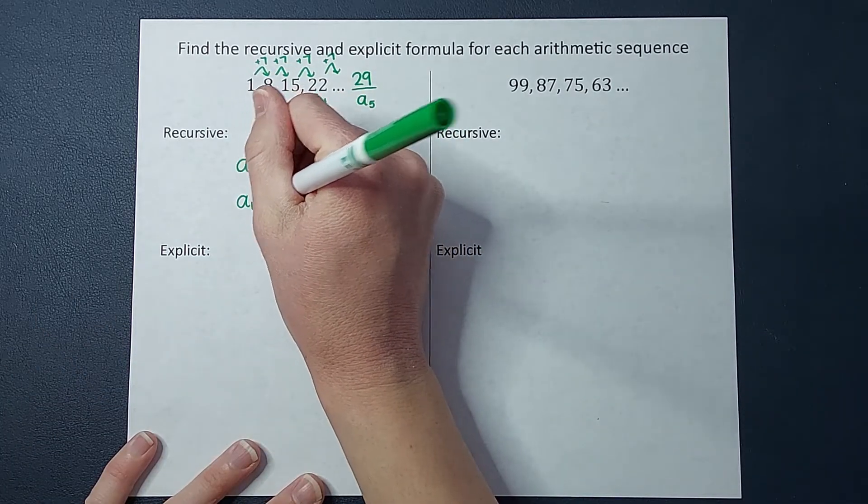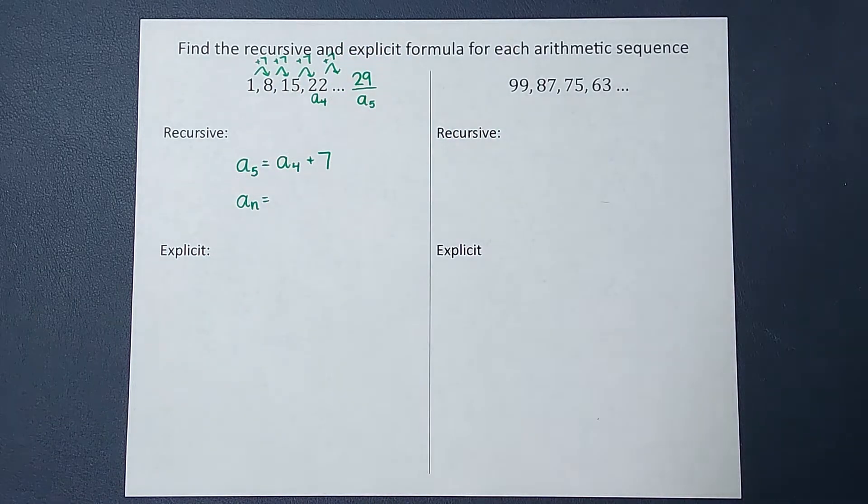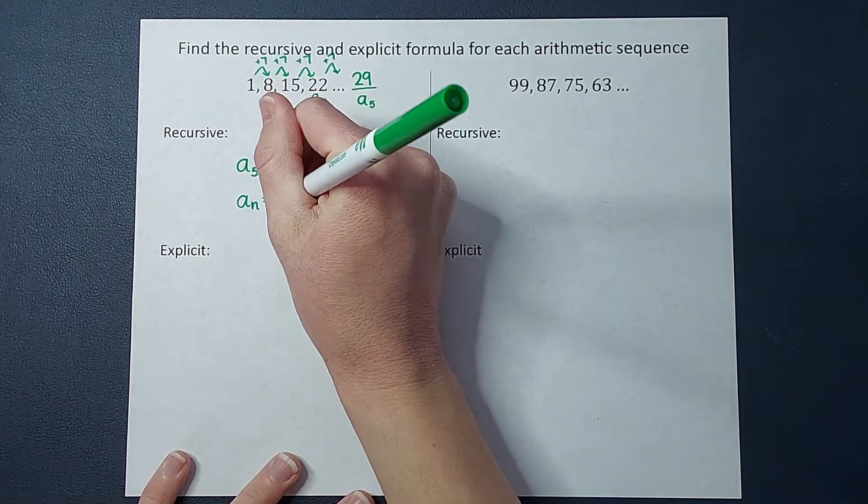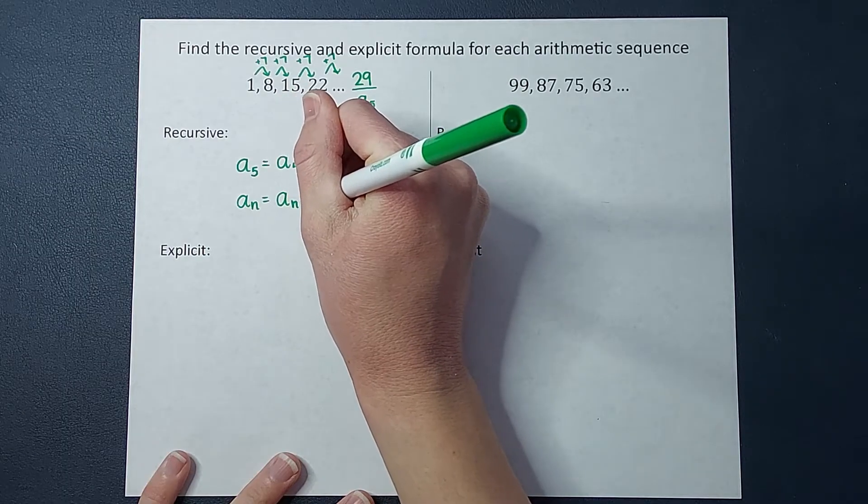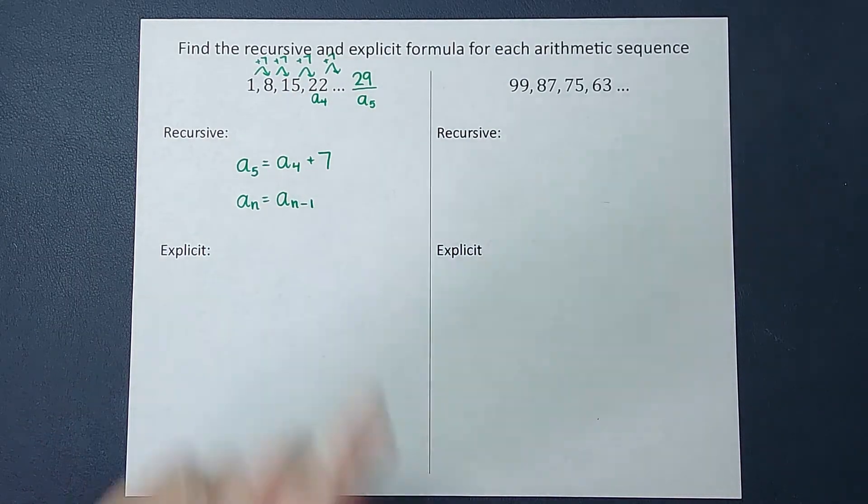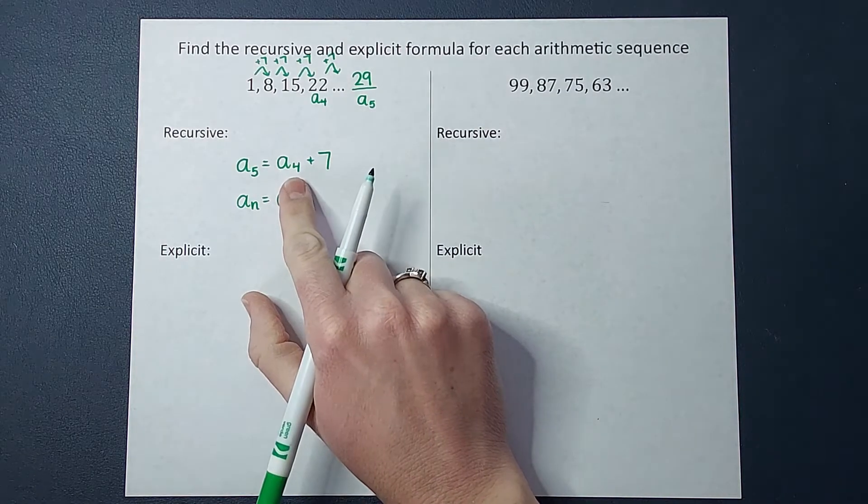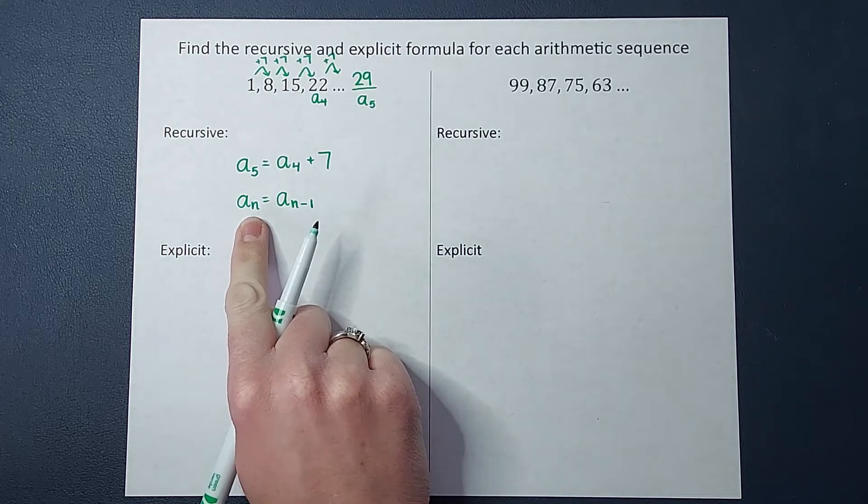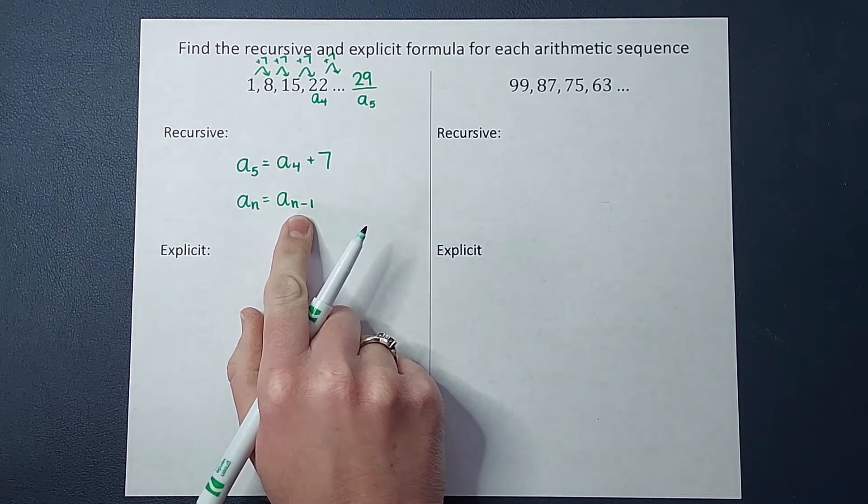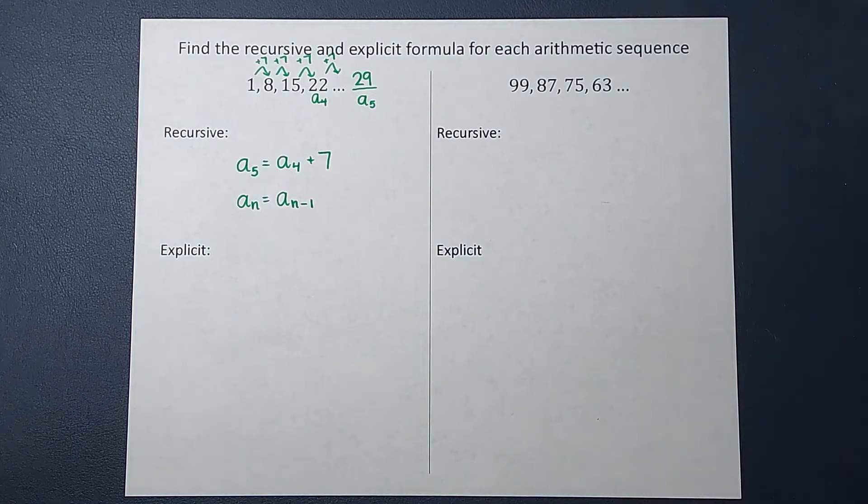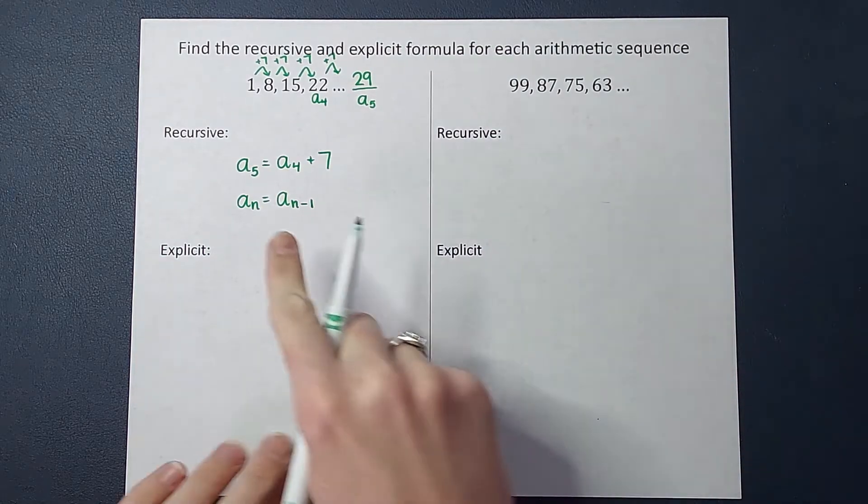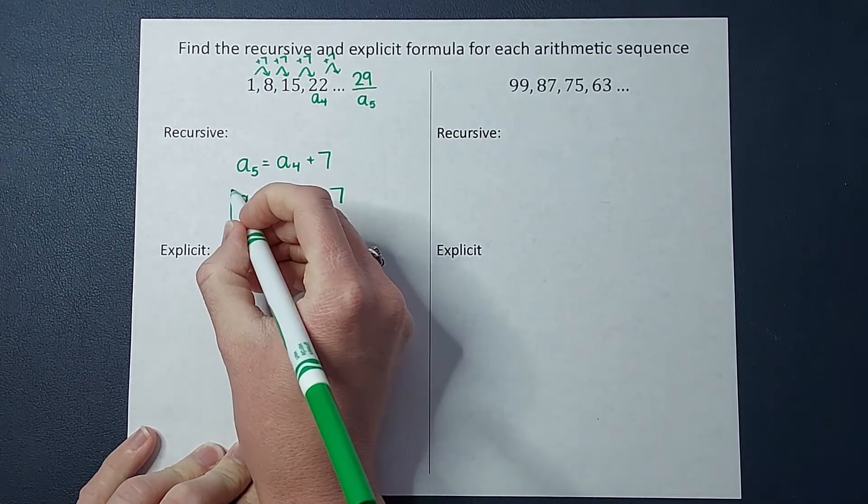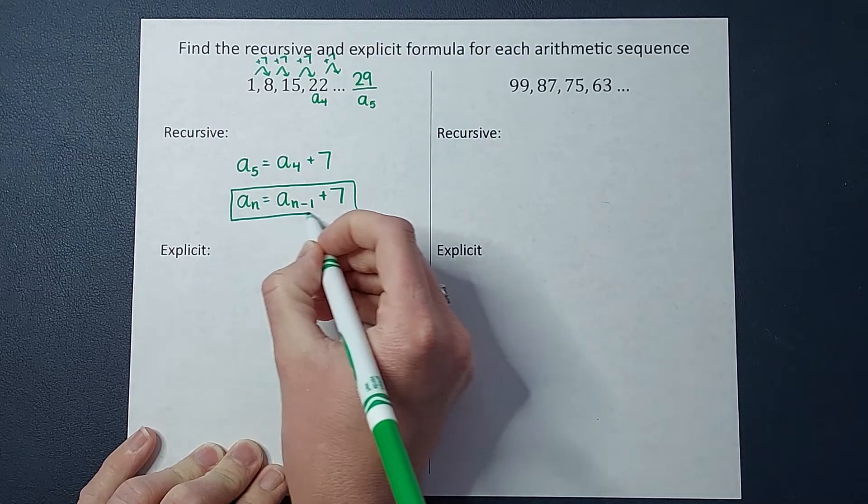So how do I show that in math language? This is where our a sub n comes in. So I'm going to say a sub n, which just means whatever place you want to find, you plug in what you want for n. Whatever you want to find, take the one before it. But how do I write that in math language? I write it as a sub n minus one. That means the one before it, because isn't it four, five minus one. So if I want to find the hundredth term, I need to know the 99th. So that's that a sub n minus one. And then what do you do to the one before? In this case, we add seven. There we go. Isn't it beautiful?